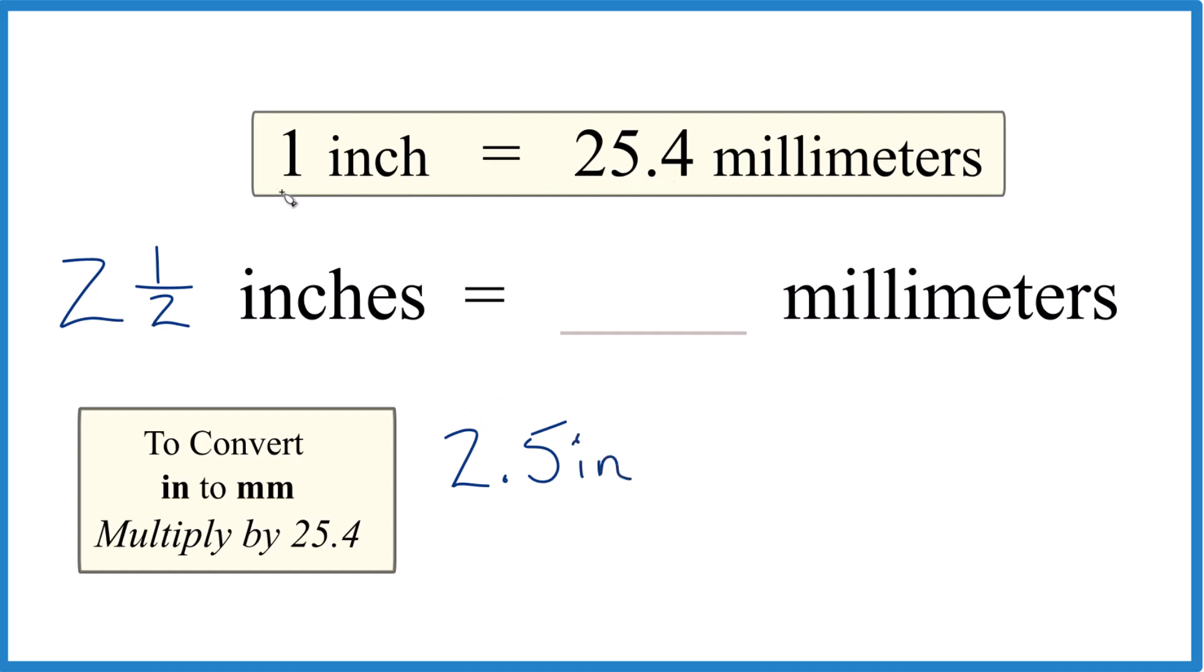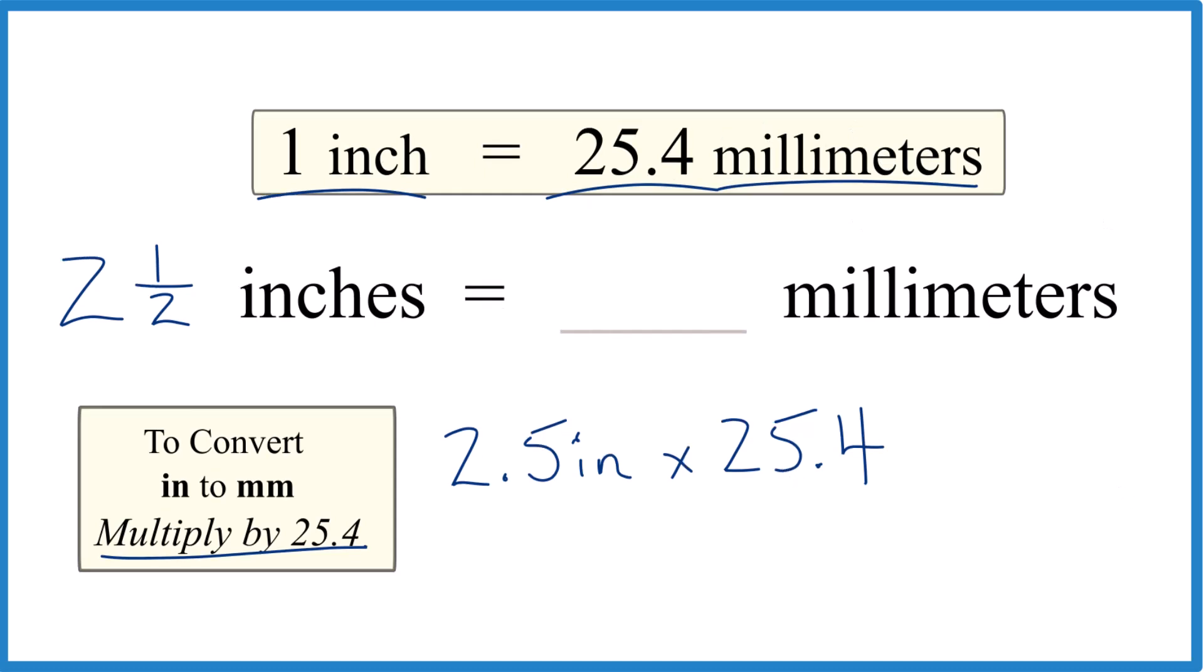So we know one inch is 25.4 millimeters, we're just going to multiply by 25.4 to get from inches to millimeters. And remember, one inch equals 25.4 millimeters, so we can call that 25.4 millimeters per inch.